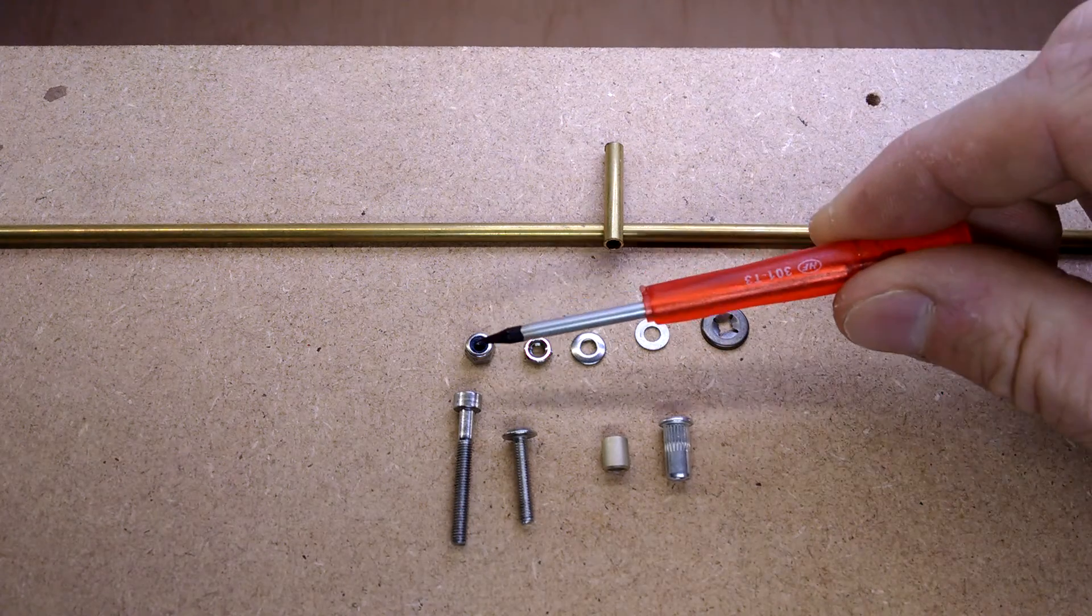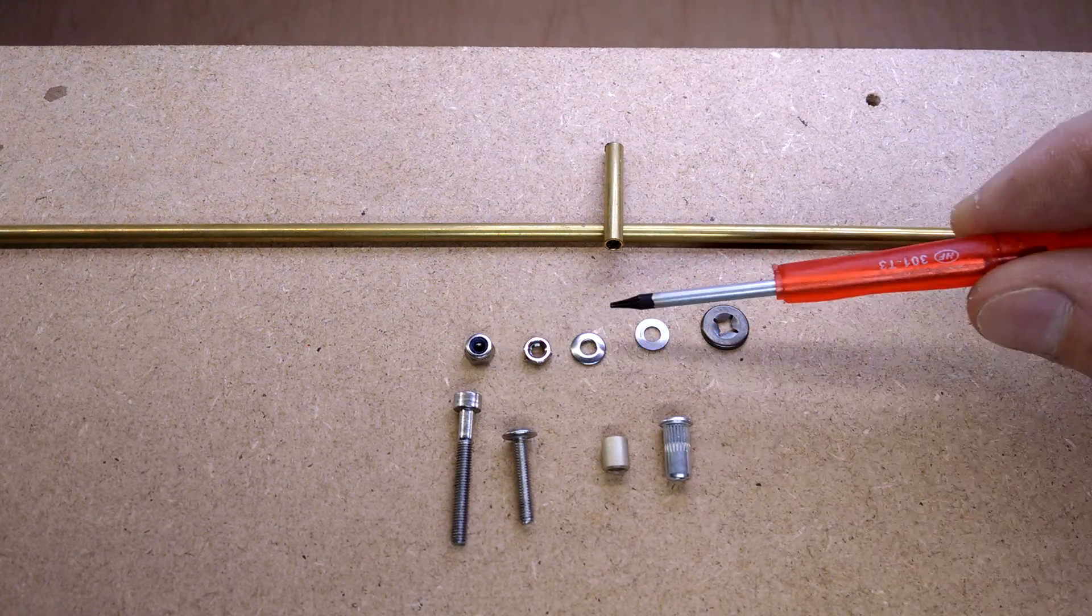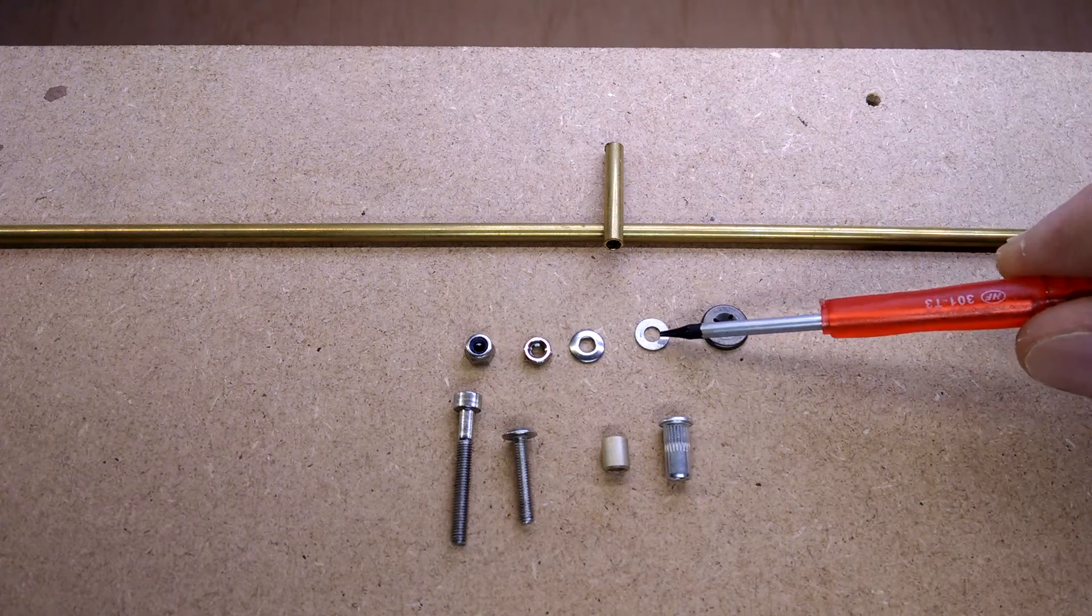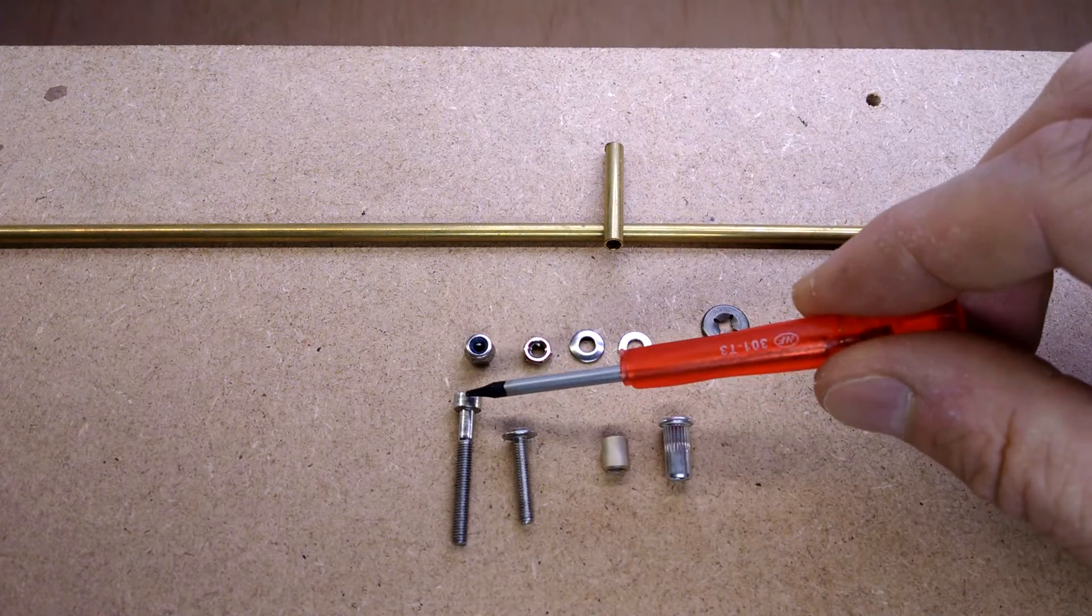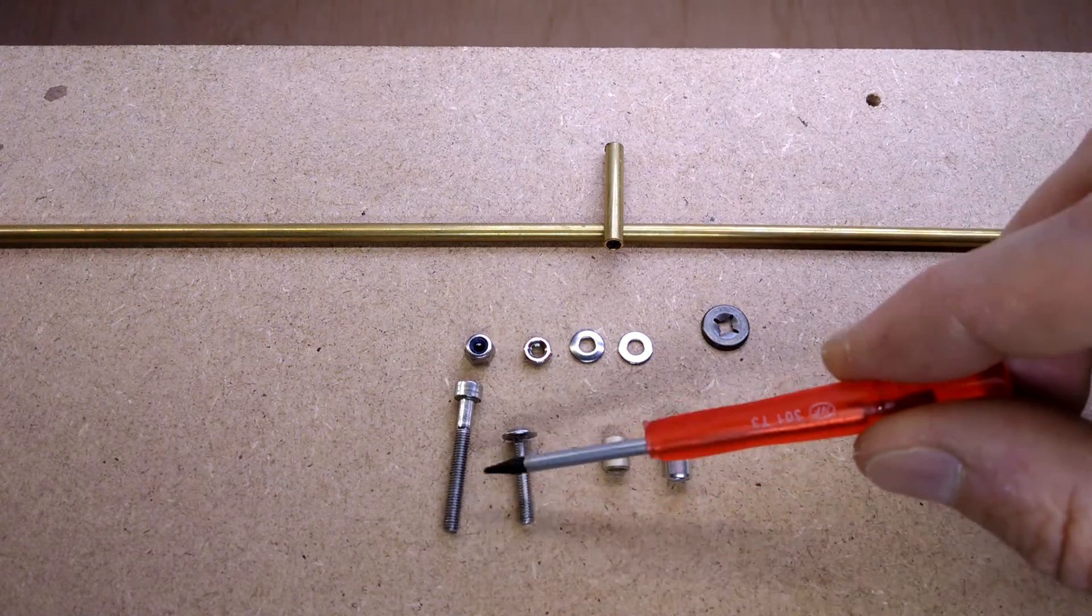So I got the hex nut normal, I got the nyloc one, I got a conical spring washer. I got a normal washer for an M3. I got the normal M3 socket head allen bolt.